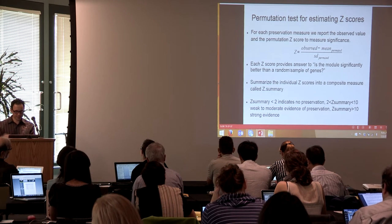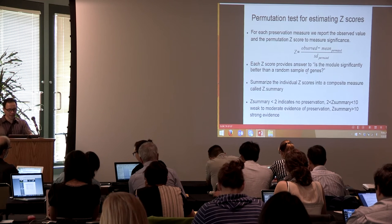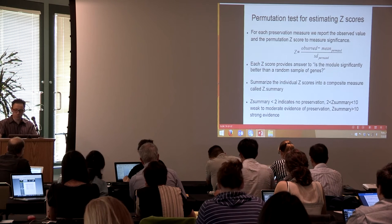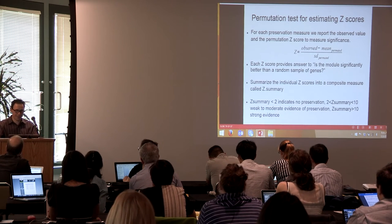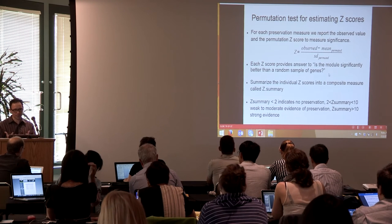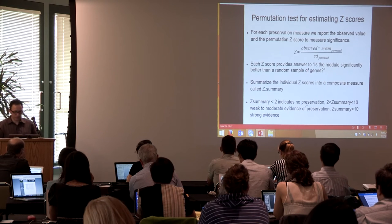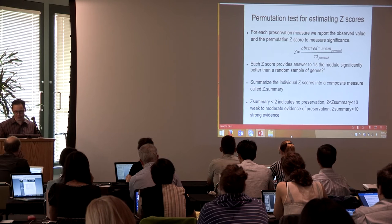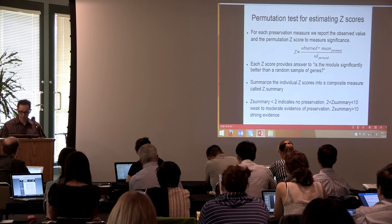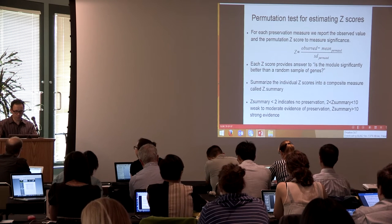We have four connectivity statistics and four density statistics, giving eight z-scores. We summarize these into an aggregate z-summary score. The thresholds are: if z-summary is less than 2, the module is not preserved — no matter how you cluster. A z-score between 2 and 10 is moderately preserved. A z-summary greater than 10 means strong evidence of preservation.